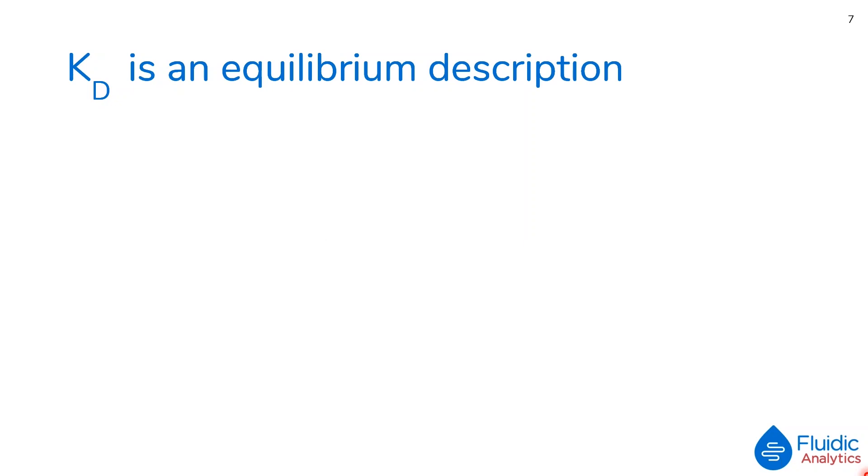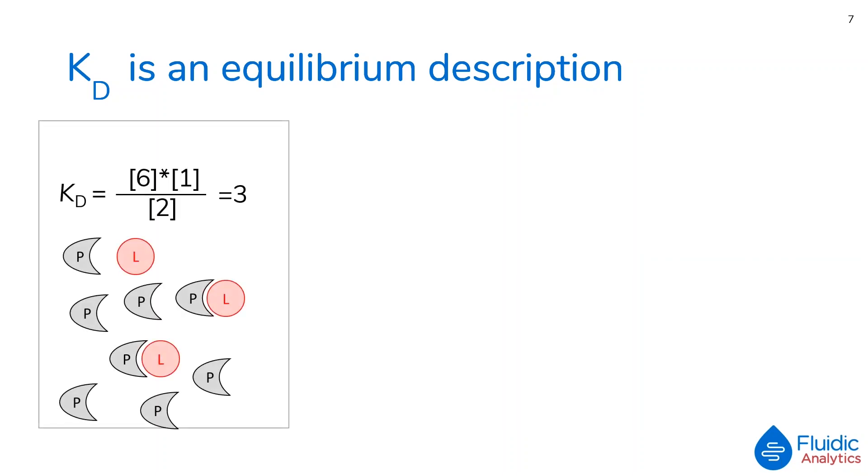KD is an equilibrium description, and is not representative of the concentrations of proteins and ligands in any given system. This is something to always bear in mind. In the following three examples I am about to go through, the KD for the system will always remain at 3. So in the first example, there are 8 proteins and 3 ligands that are in the system. With a KD of 3, that means there will always be 6 free proteins, 1 free ligand, and 2 protein-ligand complexes at any moment in time.